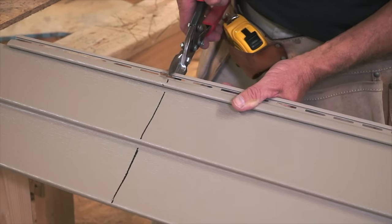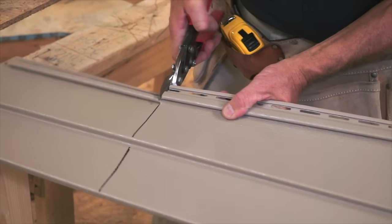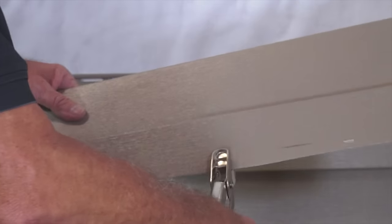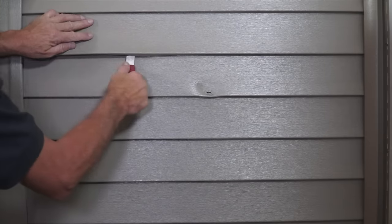Common vinyl siding installation tools you will need include tin snips, a nail hole slot punch, a snap lock tool, and a zip lock tool.